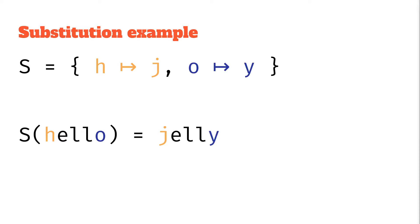Cool. We can add other things to our set of mappings. So again, our substitution is this set of mappings. Here, if we add another mapping from O to Y, we change that O on the end of hello to Y, we get jelly.